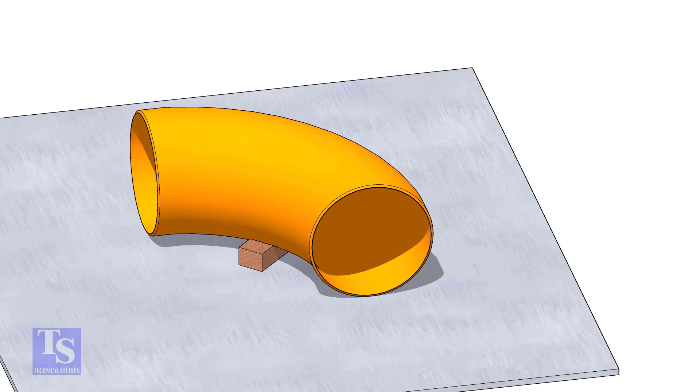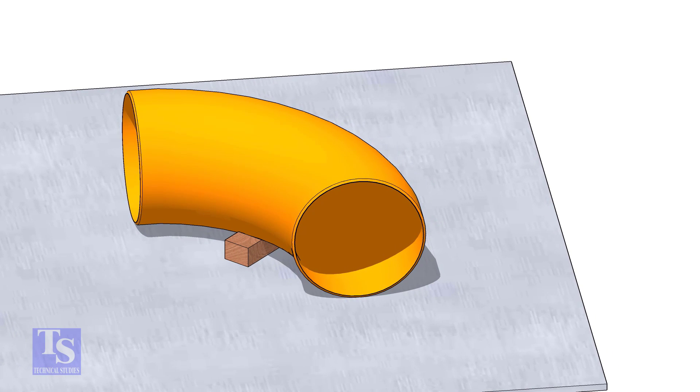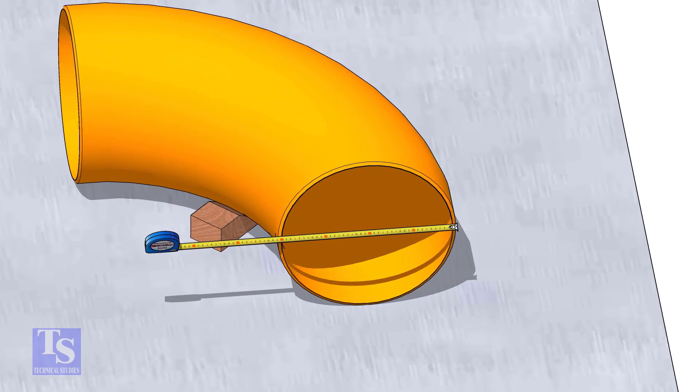I am going to mark the center of a 16 inch elbow. The outside diameter is 406 millimeters.